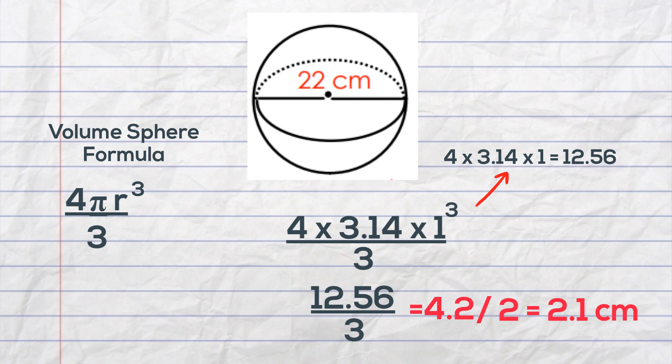Divide this by two. And the volume of the hemisphere is 2.1 centimeters cubed.